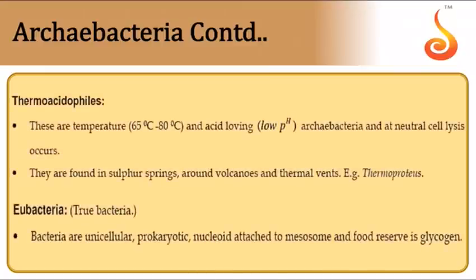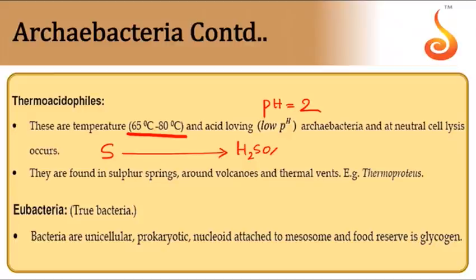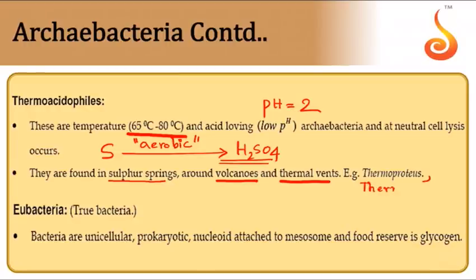Thermoacidophiles are chemosynthetic Archaebacteria that thrive at very high temperatures and very low pH (around 2). They oxidize sulfur into sulfuric acid under aerobic conditions, increasing acidity in their surroundings. They are found in sulfur springs, around volcanoes, and in thermal vents. Examples: Thermoproteus and Thermoplasma.